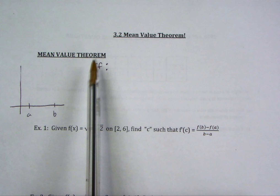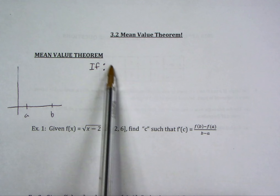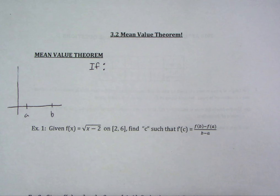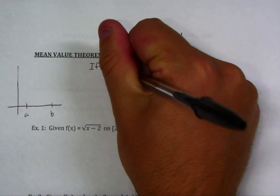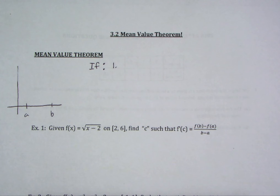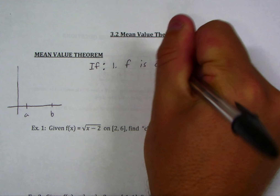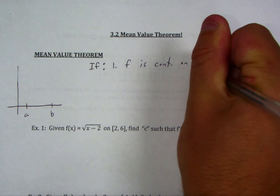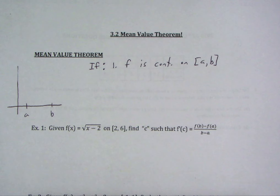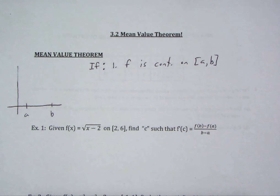As with any theorem, we always start with the conditions — these are the most important things about any theorem. What has to be true to use it? Number one, we need a function to be continuous on a closed interval. That is how the intermediate value theorem and the extreme value theorem started. It's all about continuity.